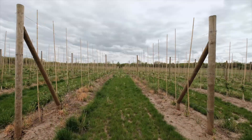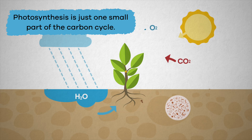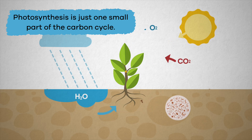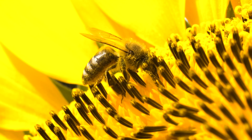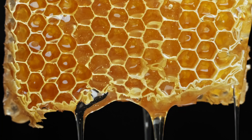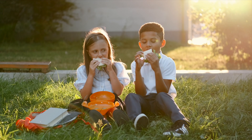Without carbon there would be no photosynthesis, and without photosynthesis there would be no food. Photosynthesis is just one small part of the carbon cycle, and the carbon cycle is essential in maintaining life on earth and balancing the climate.